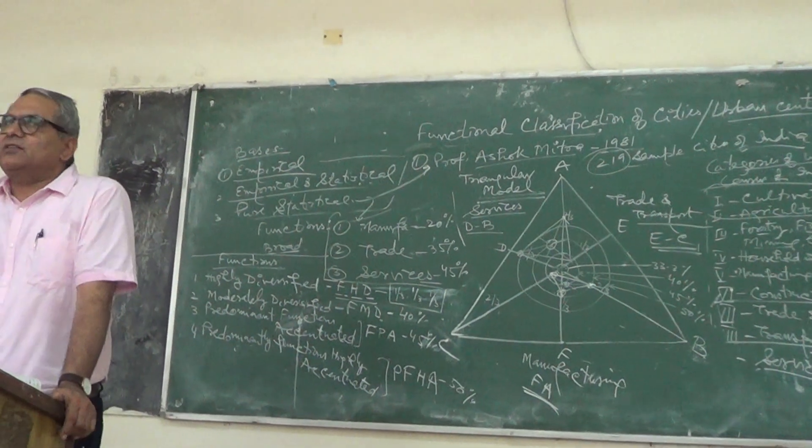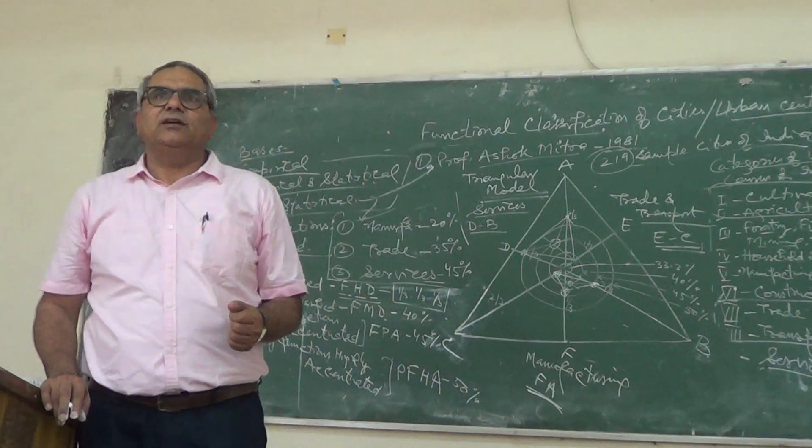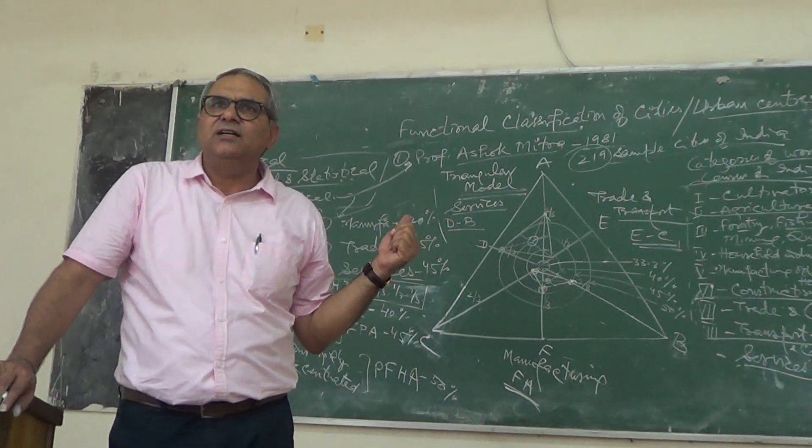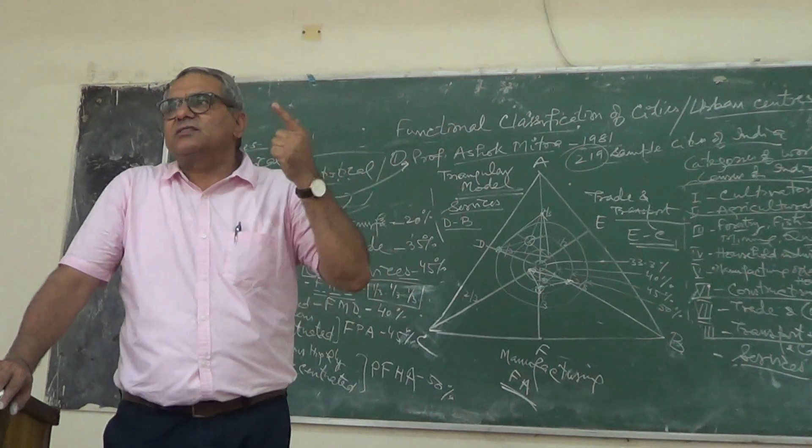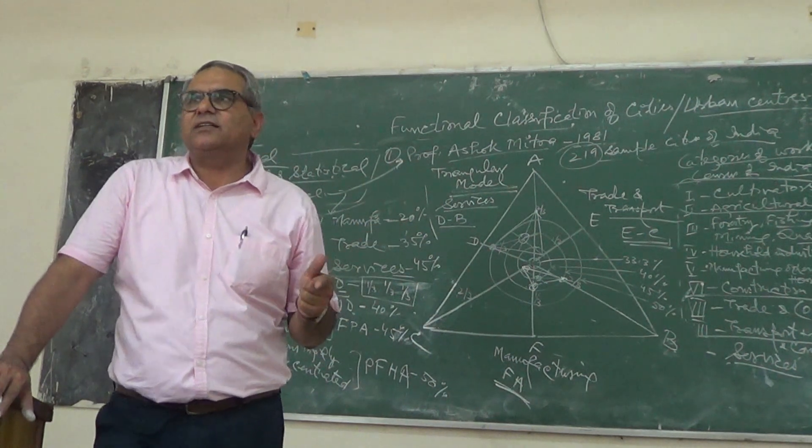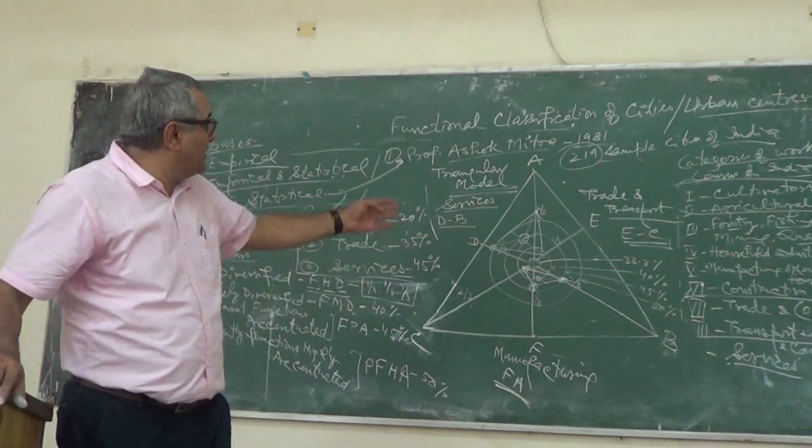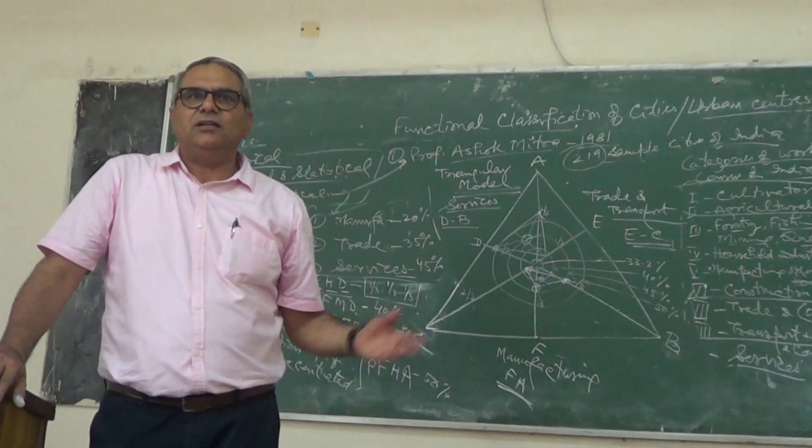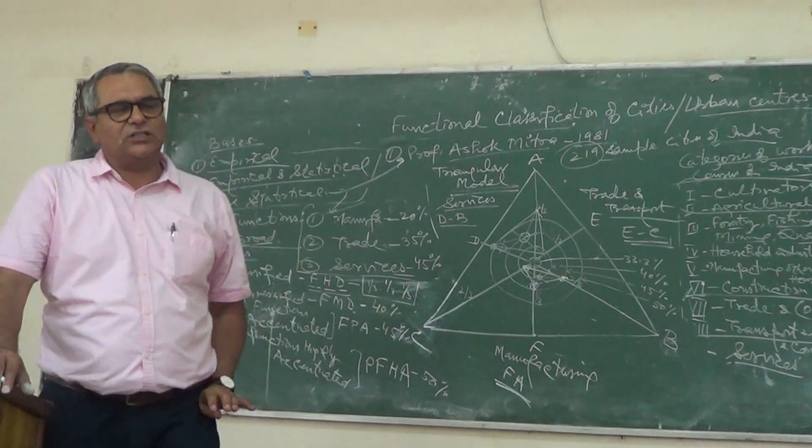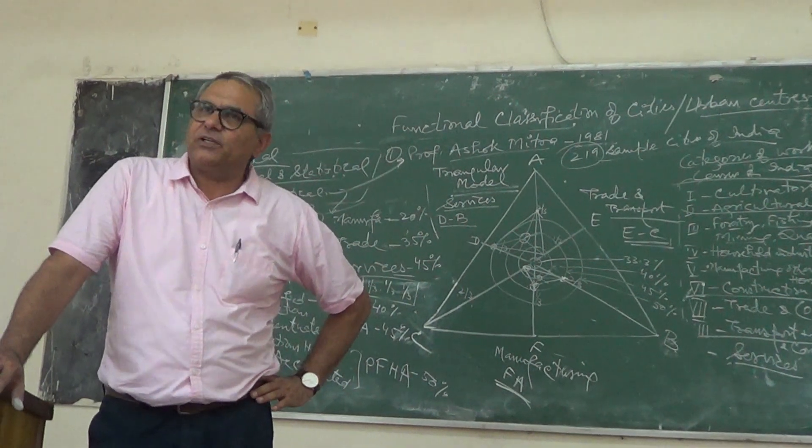So today I discussed some of the empirical classifications given by Hall, Hoyer, Weimar and one classification given of Indian cities. And we discussed C.D. Harris's empirical and statistical technique of classification. He applied and classified 9 categories of workers - generally you know 7 categories he used only on the basis of availability of data. He used this. So I discussed C.D. Harris and Ashok Mitra's functional classification of cities. So let me stop it here. Thank you very much.